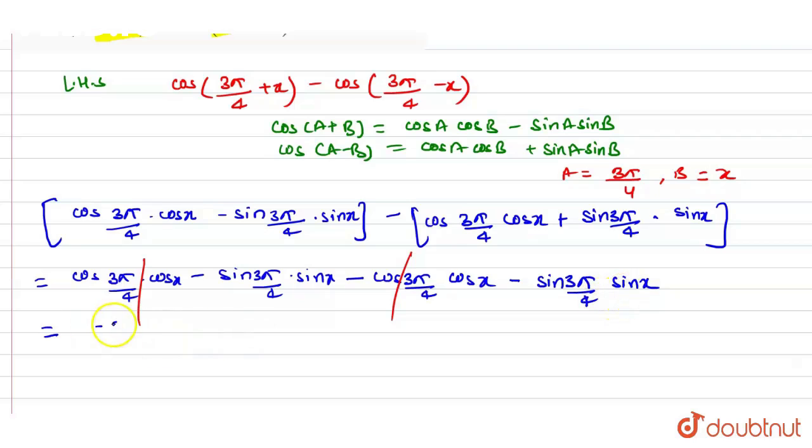So now we have minus of 2 sin 3π/4 sin x. Now we can write it as minus of 2 sin,